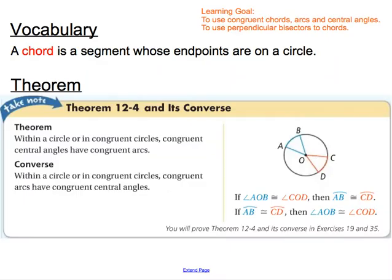First, we need the definition of a chord. A chord is a segment whose endpoints are on a circle. This brings us to our first theorem, which states that within a circle, or in congruent circles, congruent central angles cut off congruent arcs.